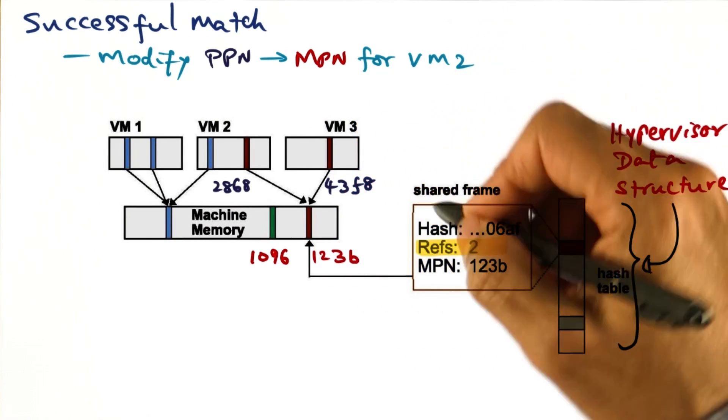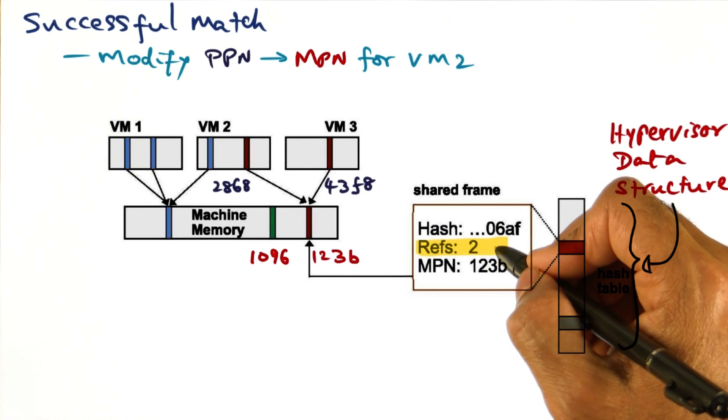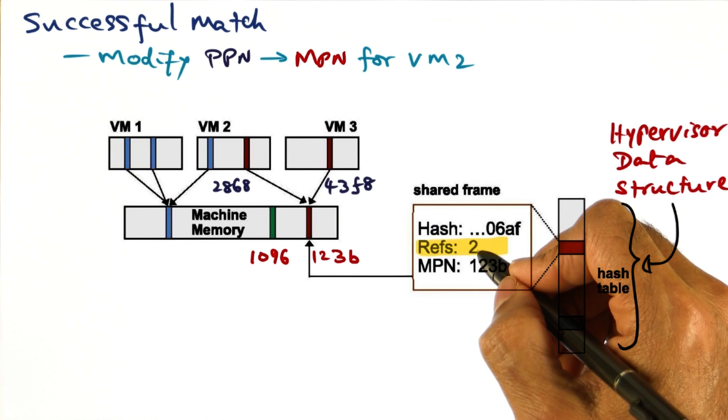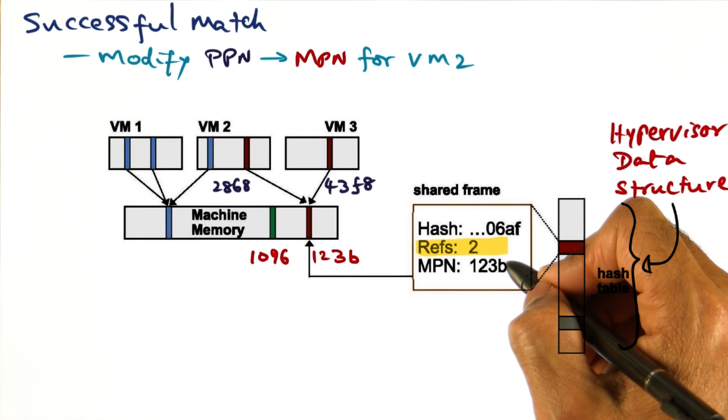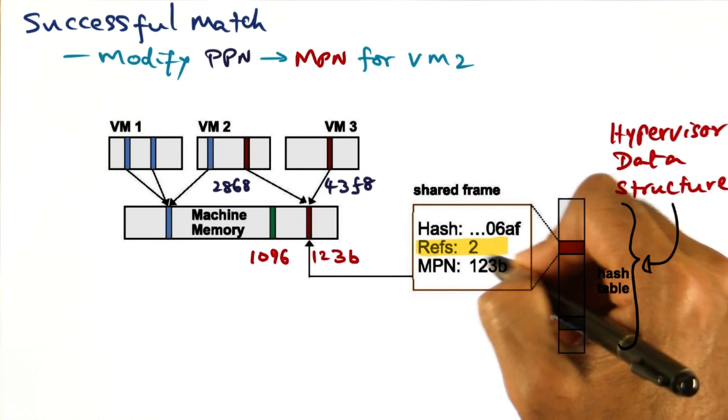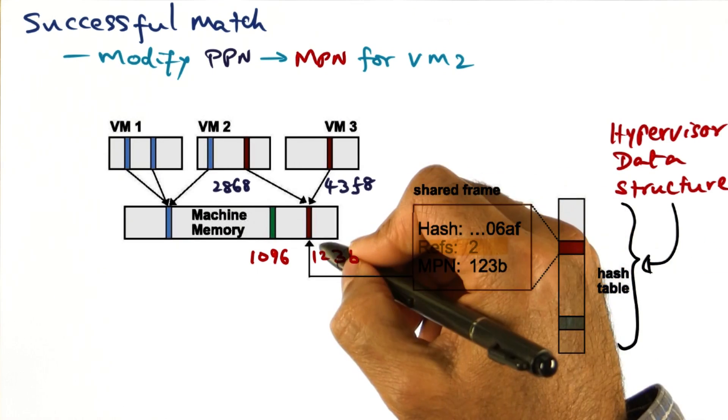And once we have done that, then we increment the reference count to this hash table entry to two, indicating that there are two different virtual machines that map to the same machine page, 123B.